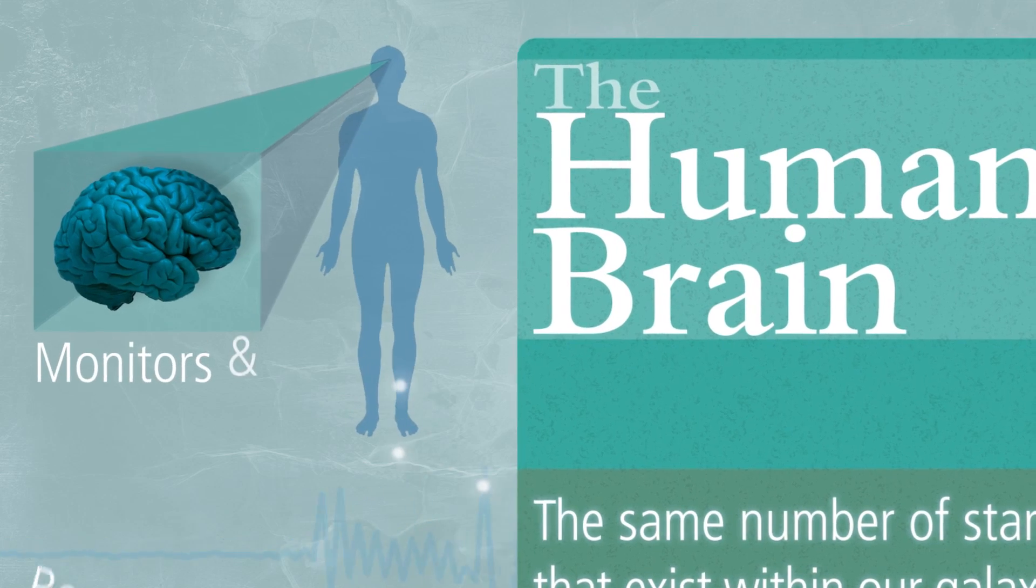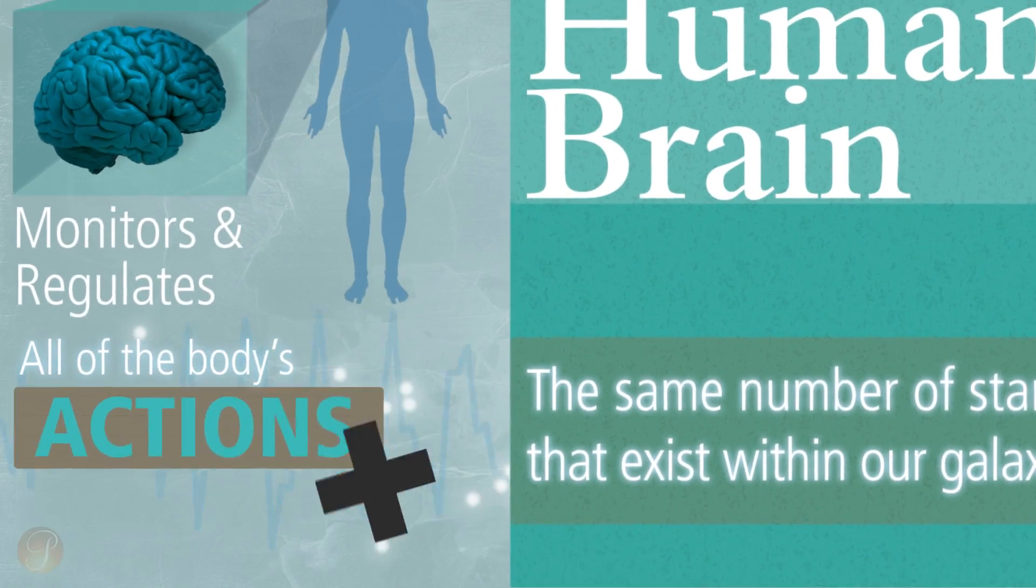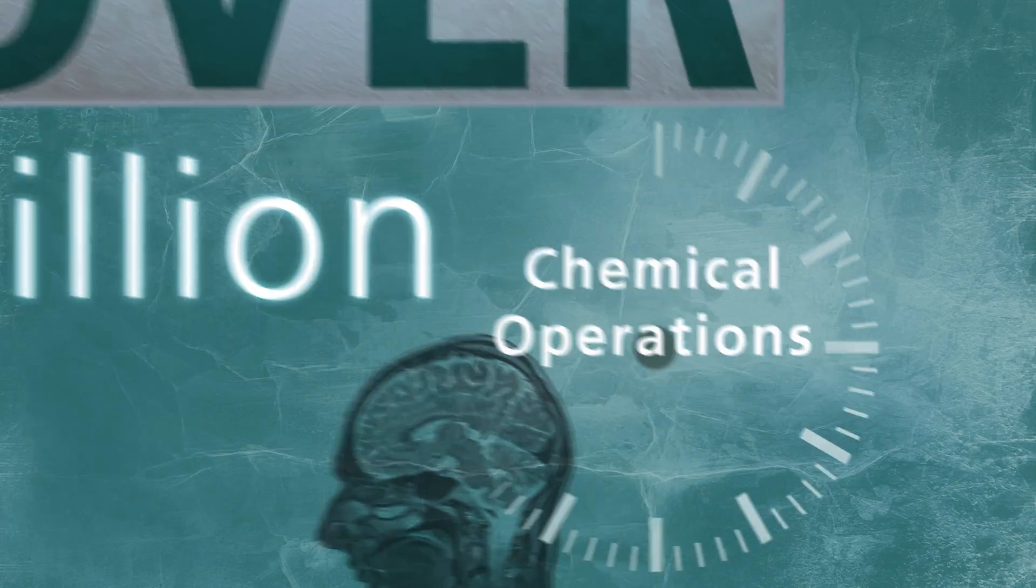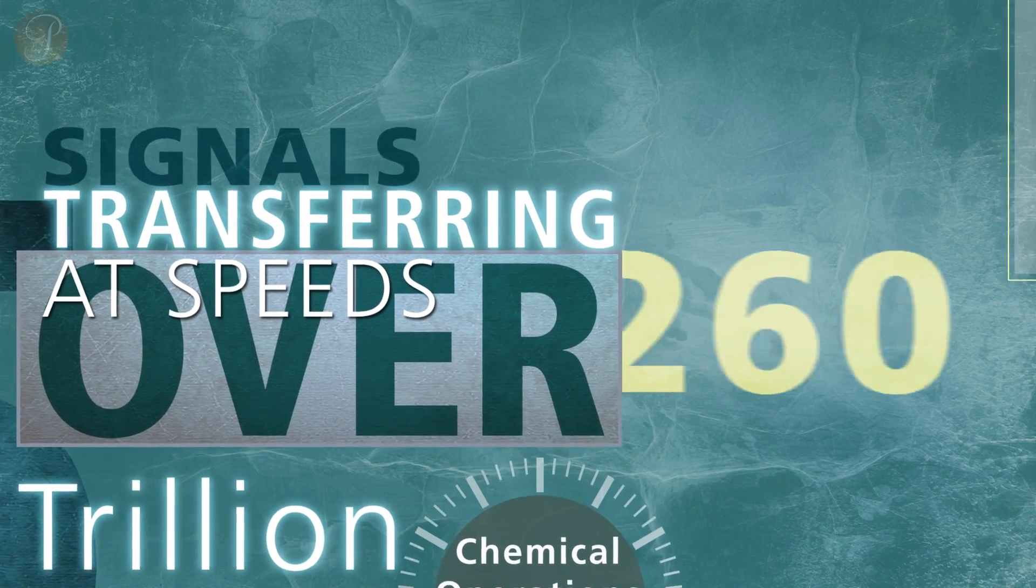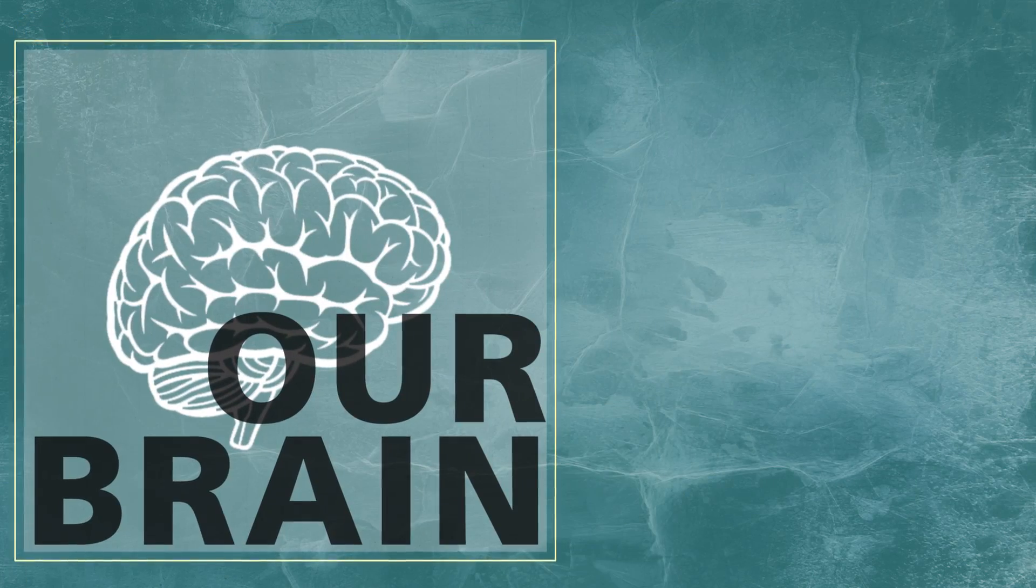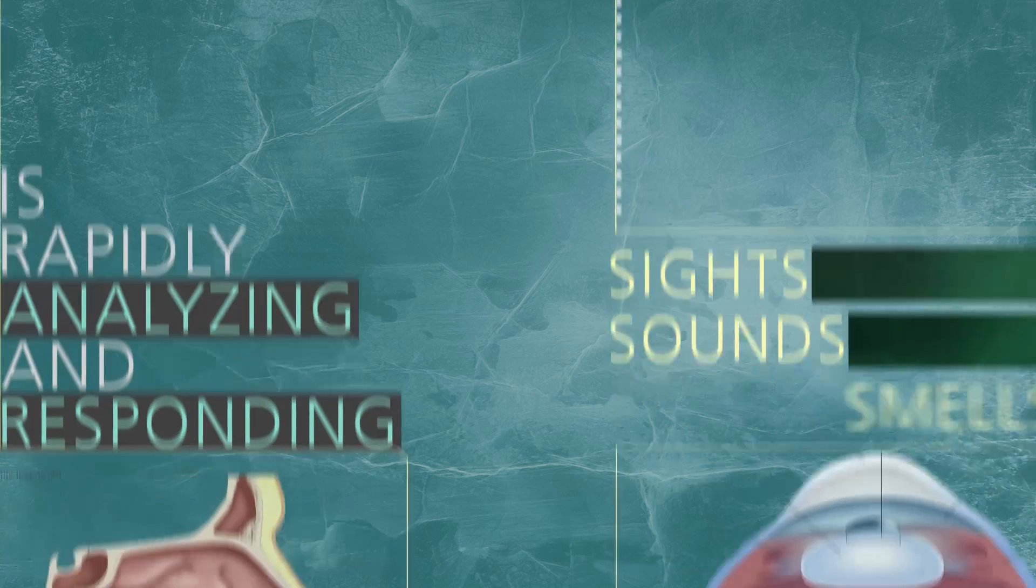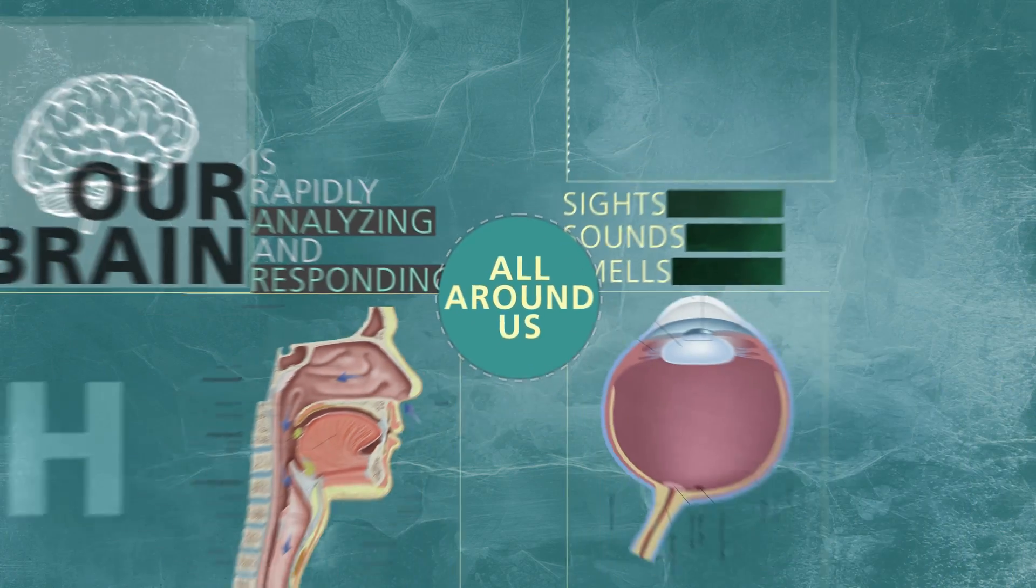The human brain monitors and regulates all the body's actions and reactions. With over 5 trillion chemical operations occurring every second and signals transferring at speeds over 260 miles per hour, our brain is rapidly analyzing and responding to all the sights, sounds, and smells all around us.